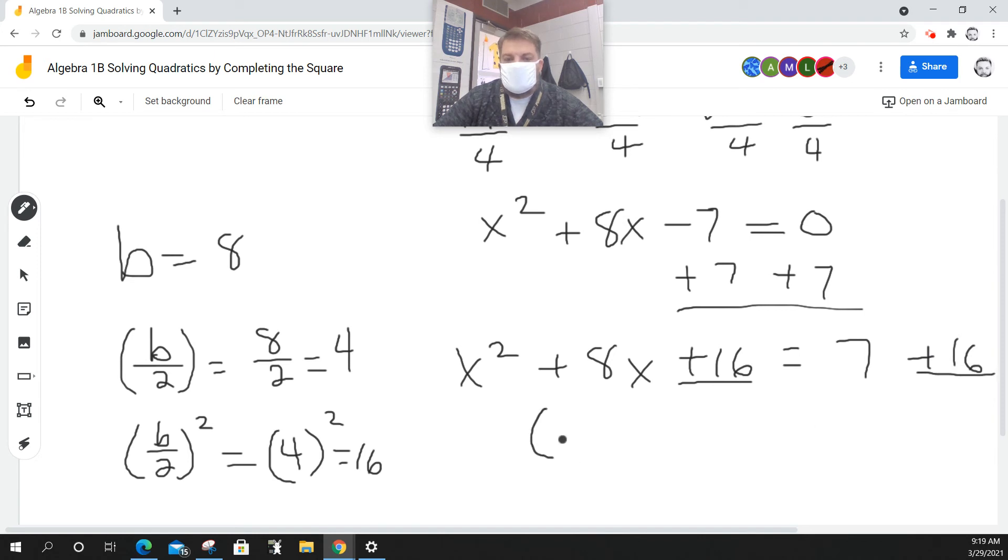When I do that, my left-hand side is x plus 4 squared. My right-hand side is 7 plus 16, which is 23.